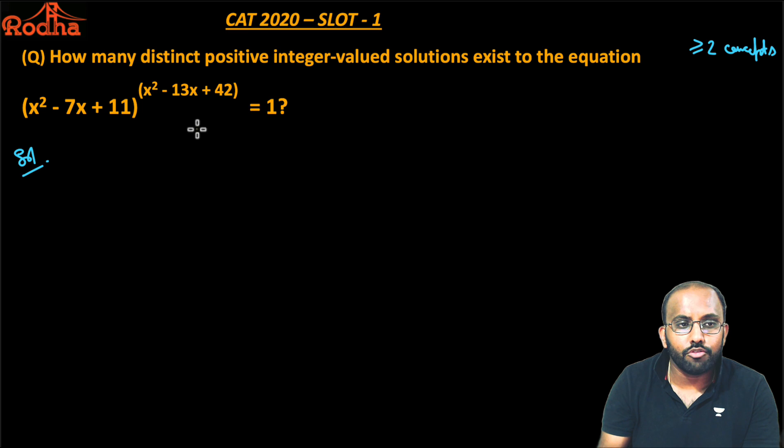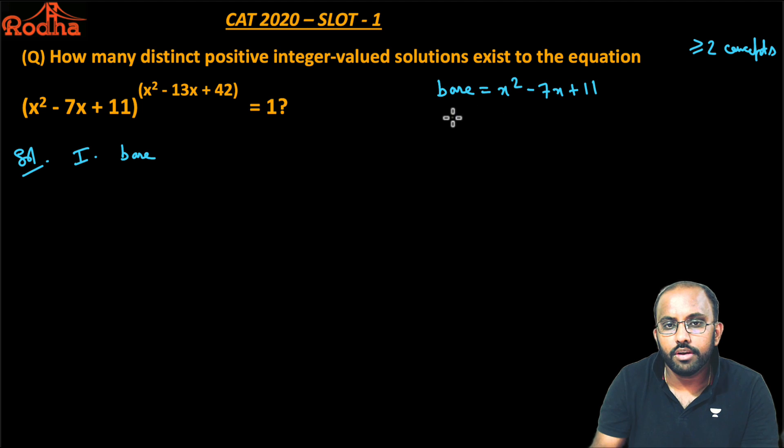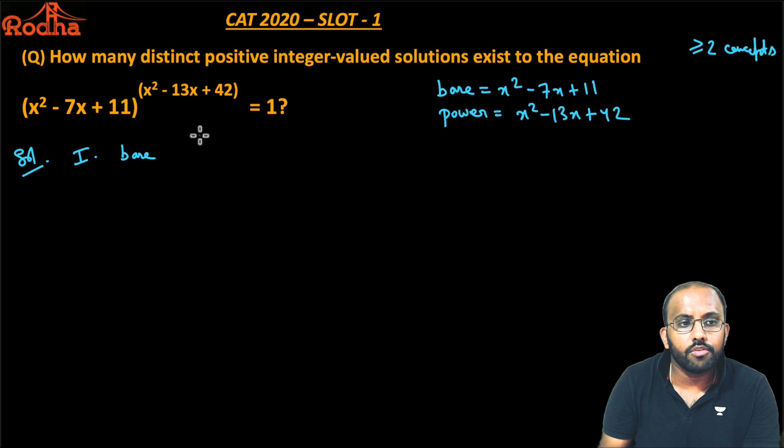In such questions, there are a couple of things to check. The base is x² - 7x + 11, and the power is x² - 13x + 42. In the first case, base can equal 1, since 1 raised to anything equals 1. The second way is when power equals 0, since any number raised to 0 equals 1.